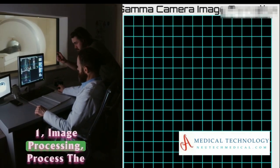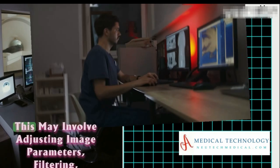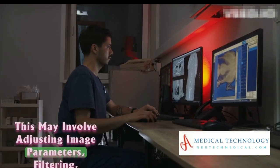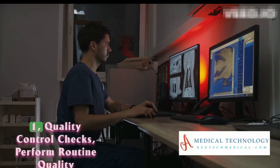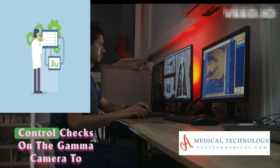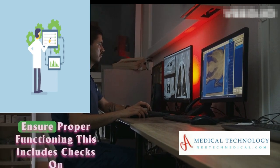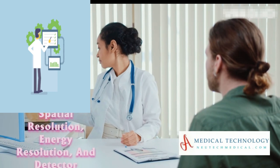Image processing: Process the acquired images using specialized software. This may involve adjusting image parameters, filtering, and enhancing image quality for interpretation. Quality control checks: Perform routine quality control checks on the gamma camera to ensure proper functioning. This includes checks on spatial resolution, energy resolution, and detector uniformity.